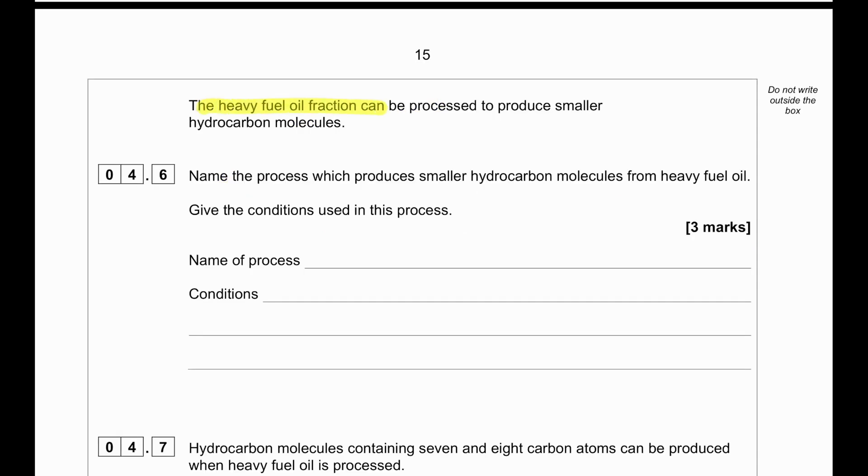The heavy fuel oil fraction can be processed to produce smaller hydrocarbon molecules. Name the process which produces smaller hydrocarbon molecules from heavy fuel oil and give the conditions. The name of the process is going to be cracking. It can be either catalytic cracking or steam cracking using high temperature. So we need high temperature and steam as catalyst.